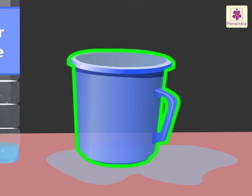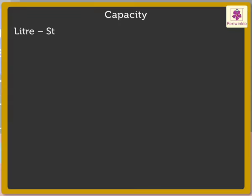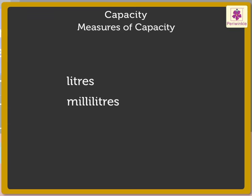The amount of liquid a container can hold is called its capacity. Here, the amount of water that the jar is holding is called the capacity of the jar. Liter is the standard unit for measuring capacity. We measure the capacity of a container in liters and milliliters. A liter is represented like this, and a milliliter is represented like this.